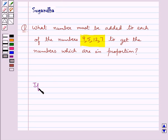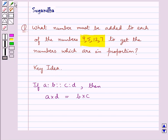We know that if A:B::C:D, then the product of extremes, A×D, is equal to the product of the means, B×C. This is the key idea for this question.